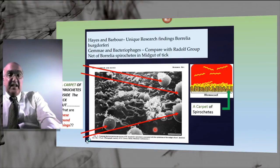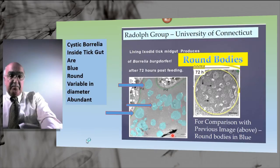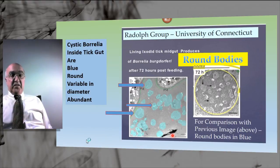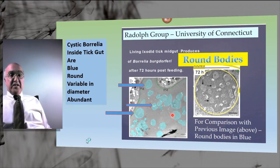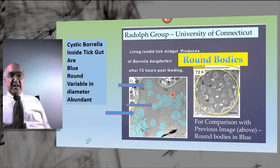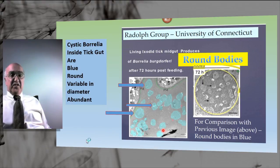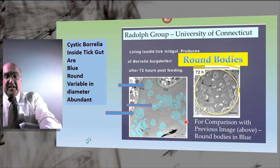These cystic forms enable the spirochetal population to survive adverse conditions that may occur during starvation times when the tick is not in contact with a blood meal. Dr. Radolf's group at the University of Connecticut has stained the tick gut using blue chromogen or pseudocolor to highlight that many structures present in the gut of the tick are round — they are in fact cystic forms of Borrelia spirochetes. So there is a mixture of spiral forms and cystic forms in the tick gut.